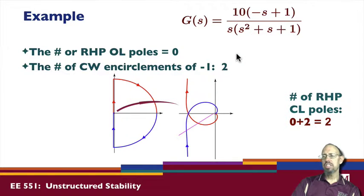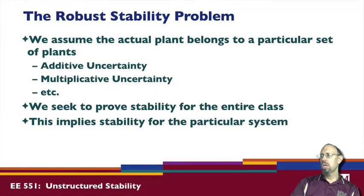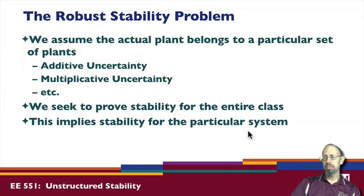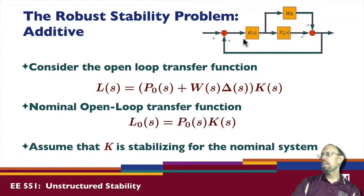The Nyquist criterion tells us about stability of the closed-loop system given information about the open-loop system and the Nyquist plot. When we come to the robust stability problem, we generally assume that the actual plant belongs to a particular set of plants — it could be additive or multiplicative uncertainty — and we seek to prove stability for the entire class. If the entire set of plants is stabilized through the closed-loop, it implies that any particular system that is a member of that set is also going to be stable.